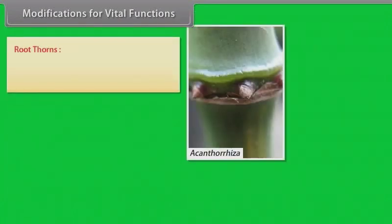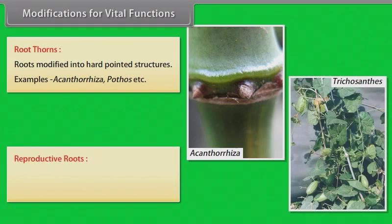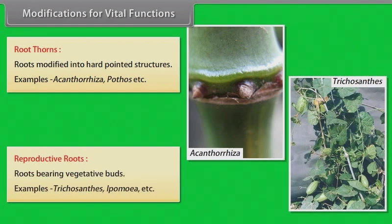Root thorns: roots modified into hard-pointed structures. Examples: Acanthorhiza, Pothos, etc. Reproductive roots: roots bearing vegetative buds. Examples: Trichosanthes, Ipomoea, etc.